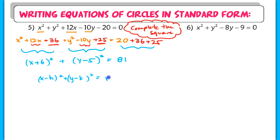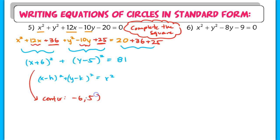There's my r squared — 81. The center for that equation is (negative 6, 5), and the radius is 9 (the square root of 81).